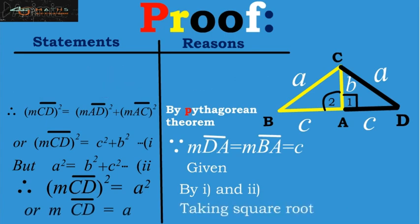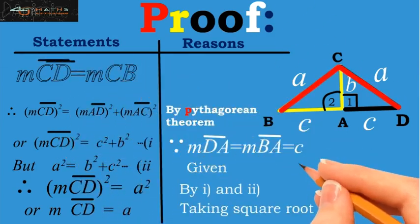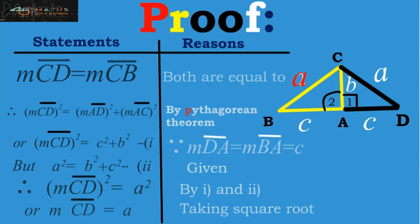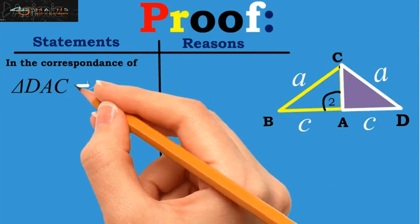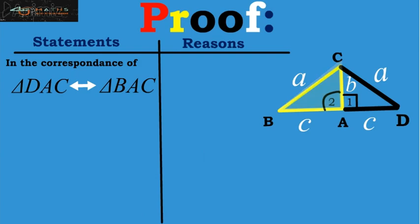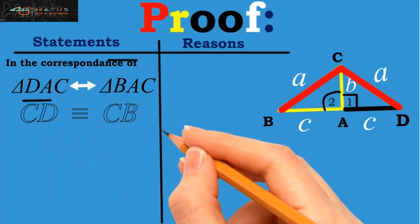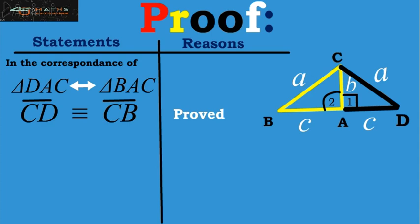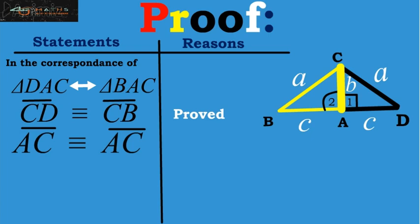Also we have measurement of CD is equal to measurement of CB because both are equal to A. Now taking the correspondence of triangle DAC with triangle BAC. Here we see that CD is congruent to CB. Why? We have just proved this above. AC is congruent to AC. As we see that this is the common side among the two triangles.